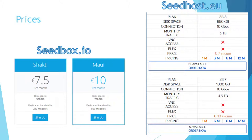Speed limitation is no big thing because the seedbox runs 24 hours a day. If you are only interested in downloading torrents, Seedbox.io is a good option for you. During my test period I had no issues at all — the support was fast, competent, and the speeds were as fast as promised. You basically get what is advertised and what you pay for.